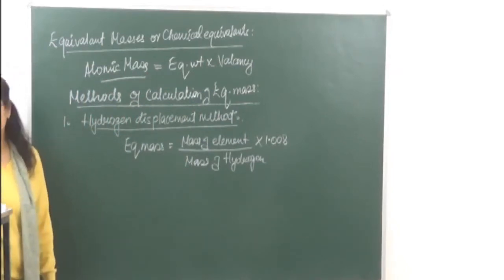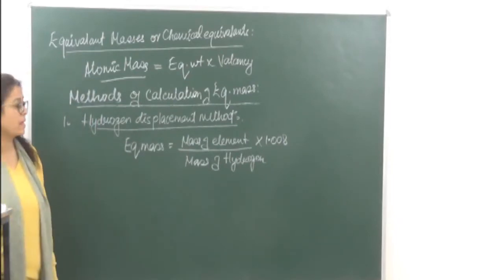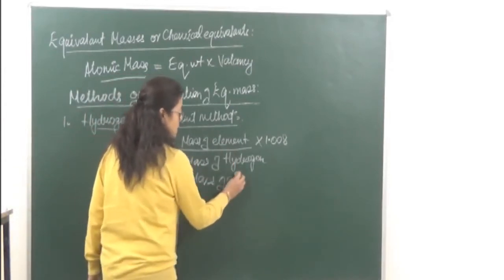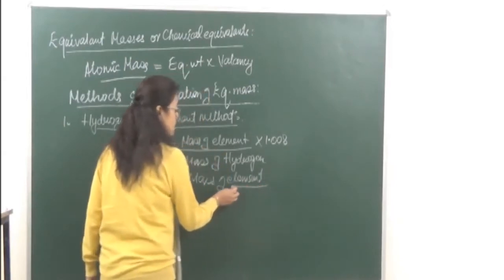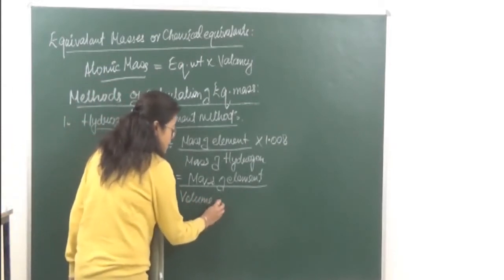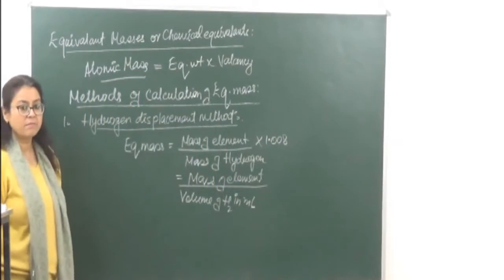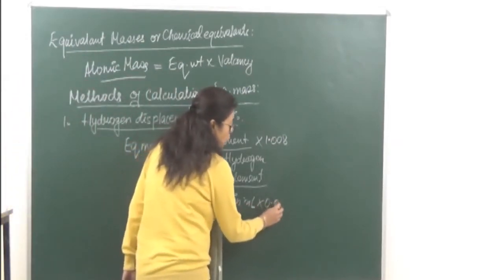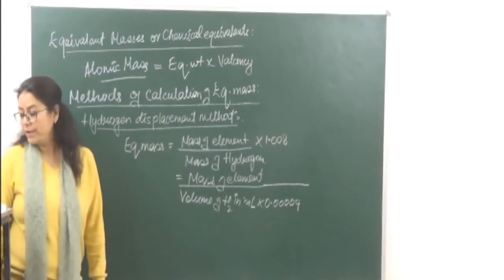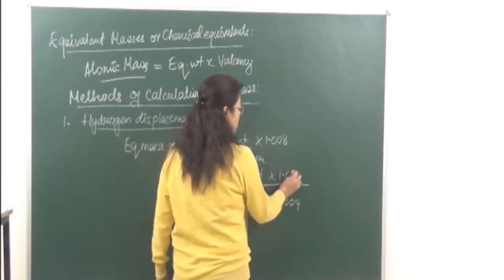We can calculate it this way. Now if instead of mass of hydrogen, the volume of hydrogen is given, then the formula changes: equivalent mass equals mass of element upon volume of hydrogen in milliliters — you must convert it to milliliters — into the density of hydrogen which is 0.00009 (or 9.0 × 10⁻⁵), into 1.008.